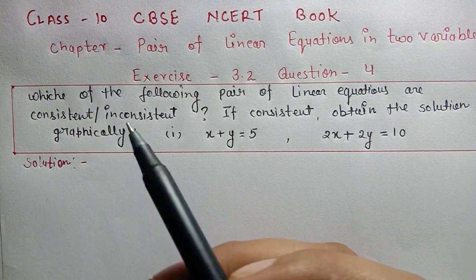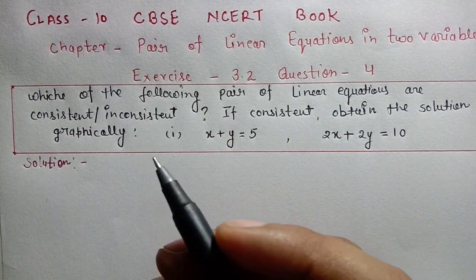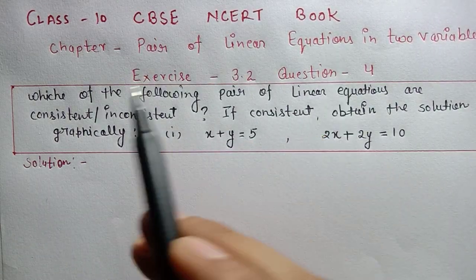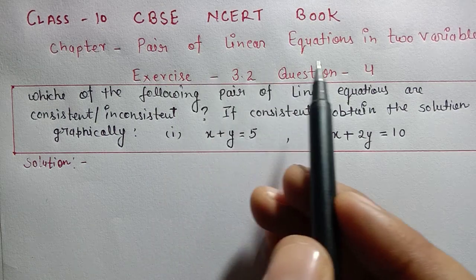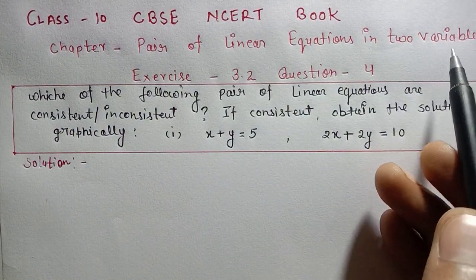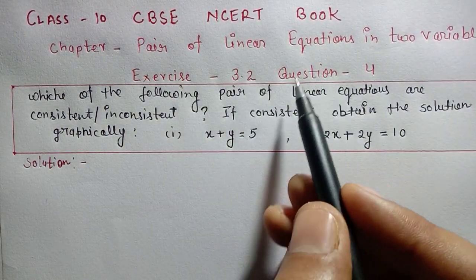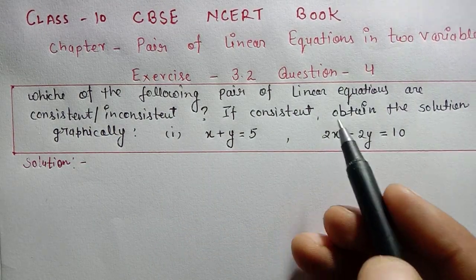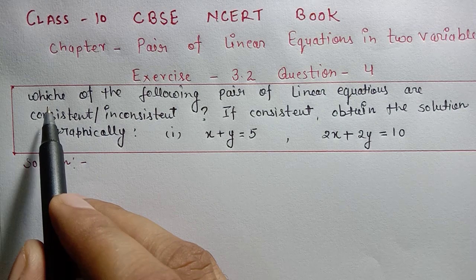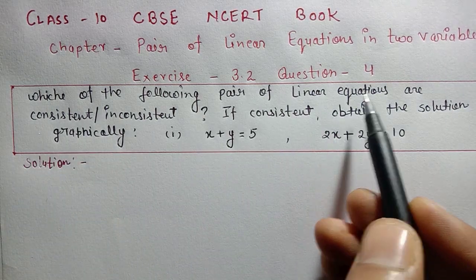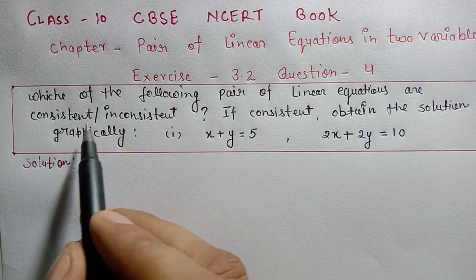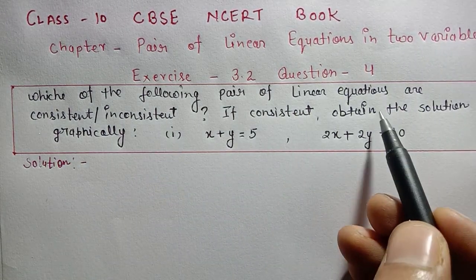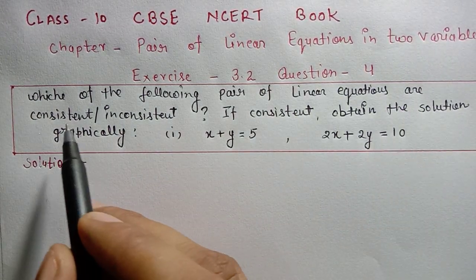Hello students, welcome to my channel. I am your maths teacher. Today I am covering Class 10th CBSE NCERT book, Chapter: Pair of Linear Equations in Two Variables, Exercise 3.2, Question 4, first part. The question asks which of the following pairs of linear equations are consistent or inconsistent. If consistent, obtain the solution graphically.